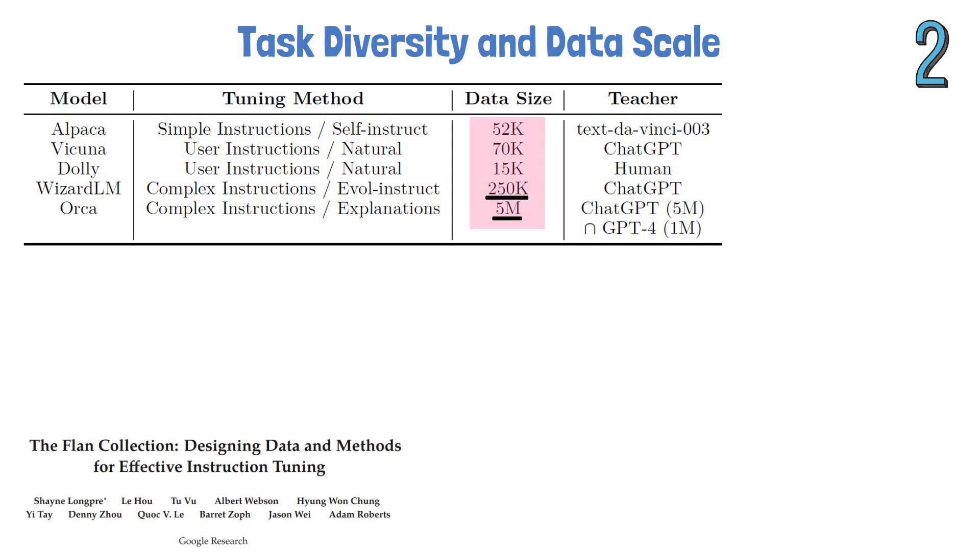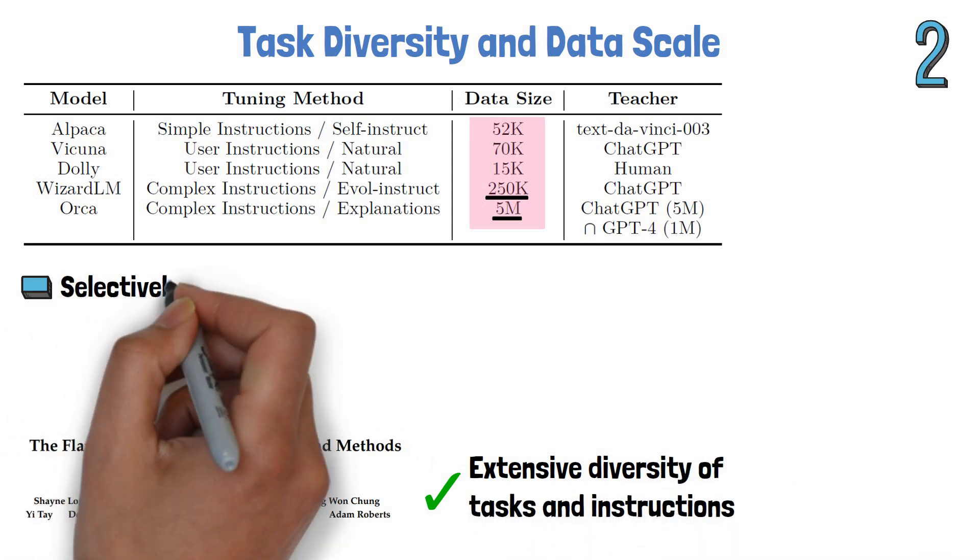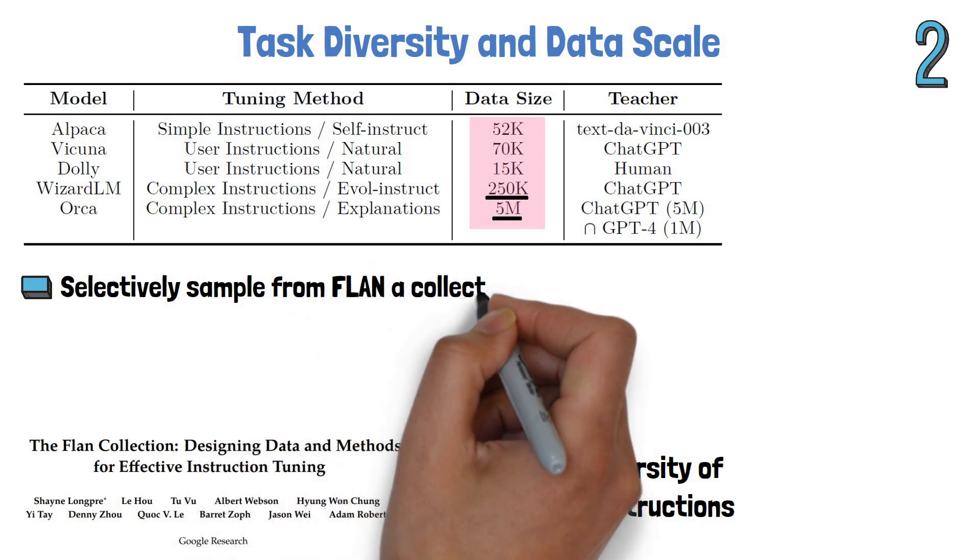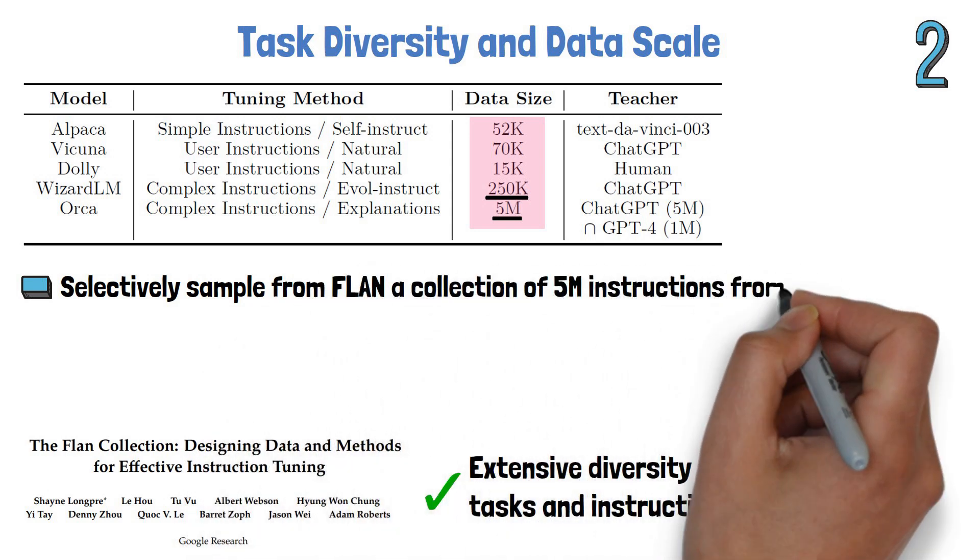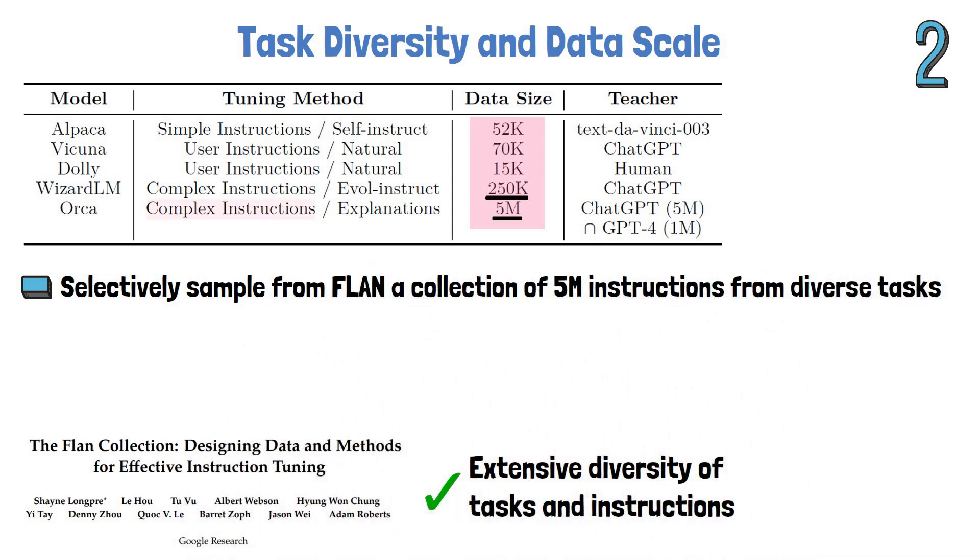In order to create their dataset, they have used the Flan Collection from Google that includes an extensive diversity of tasks and instructions. They selectively sampled from Flan a collection of 5 million instructions from diverse tasks, which is also focused on complex instructions.